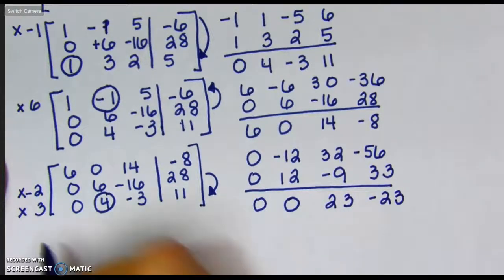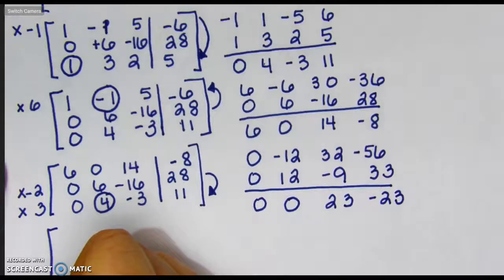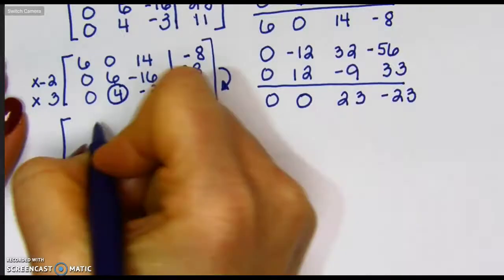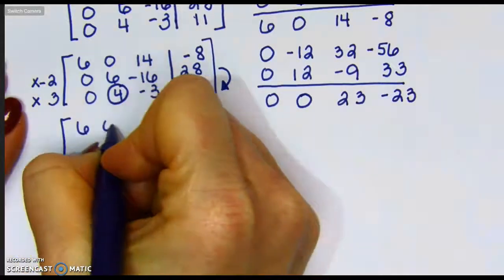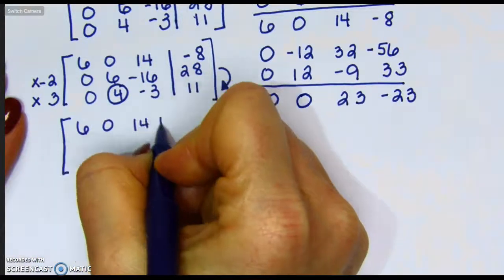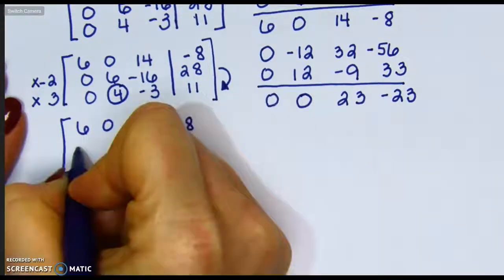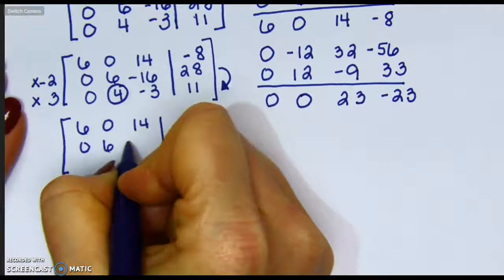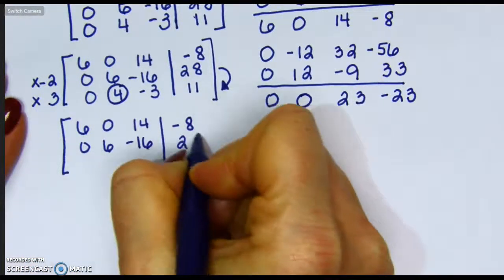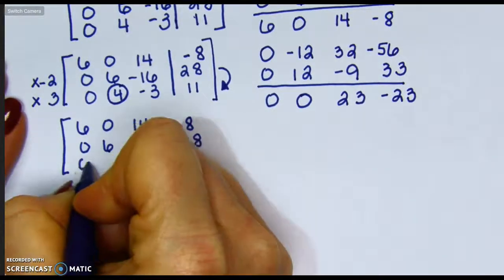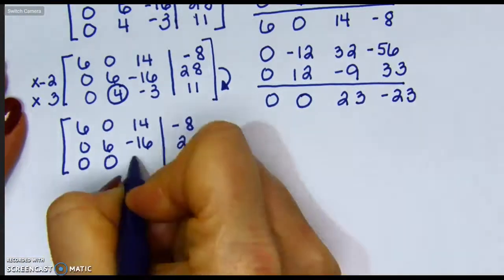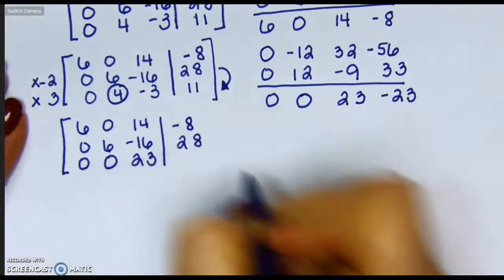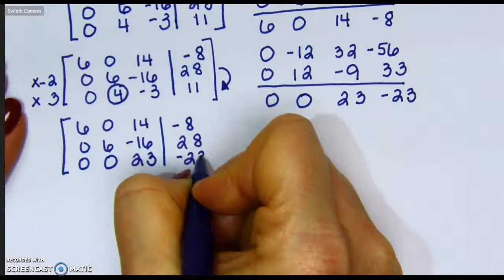Replacing that, the first two stay the same. And now my bottom row now is 0, 0, 23, negative 23.